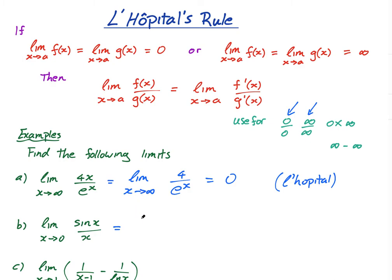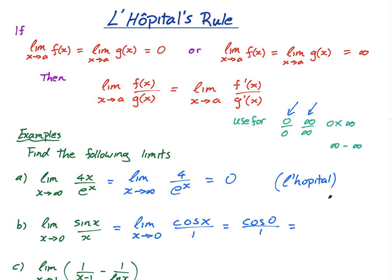Now let me use L'Hôpital's rule to get that limit of one. The limit as x approaches zero of sin(x) over x equals the limit as x approaches zero of the derivative of sin(x), which is cos(x), over the derivative of x, which is one. That gives us cos(0) over 1, and cos(0) is one, so one over one is one. Again, write 'L'Hôpital' to show the examiner what you're doing.